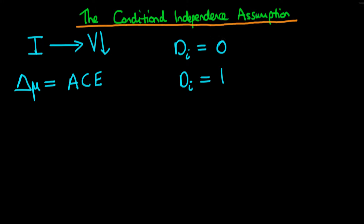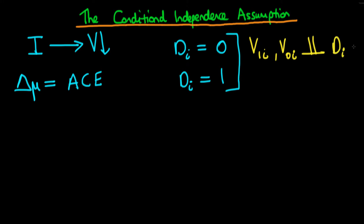In this video I want to talk about the situation when we cannot assume that DI is randomly assigned. That means we can't write that the potential level of violence in a state had they received infrastructure spending, and the potential level of violence had they not received it, are independent of DI — because we're assuming there is some selection criteria which determines whether a state receives infrastructure spending in the first place.